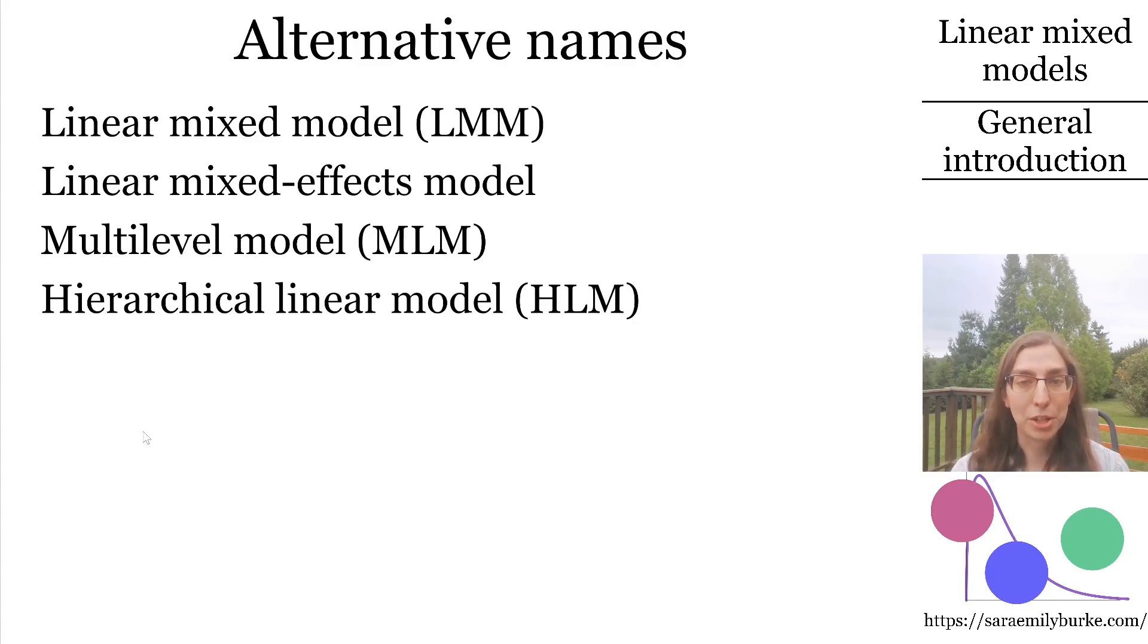But first, a note about terminology. This lesson covers linear regression models that include random terms, random intercepts, and or random slopes, in addition to the usual fixed terms like the regular regression intercept and slope you already know about. These models with random and fixed terms are called linear mixed models. The mixed part of the name comes from the fact that there are random terms and fixed terms instead of just fixed.